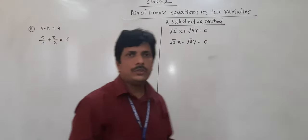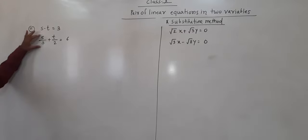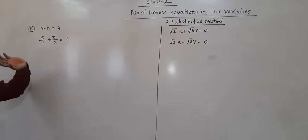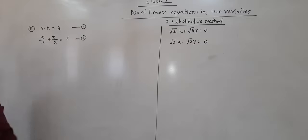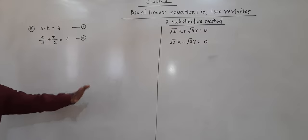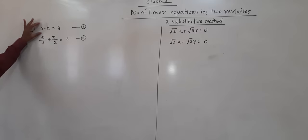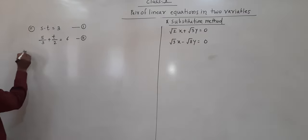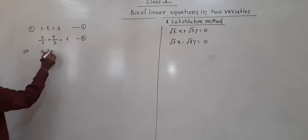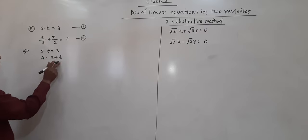Here we are going to see some more examples. The second example is: s minus t is equal to 3, and s divided by 3 plus t divided by 2 is equal to 6. Two simultaneous equations are given — this is the first equation and this is the second equation. We are using the substitution method. Any one equation we can use for substitution. This first equation s minus t equals 3 is easy to use. So s is equal to 3 plus t.